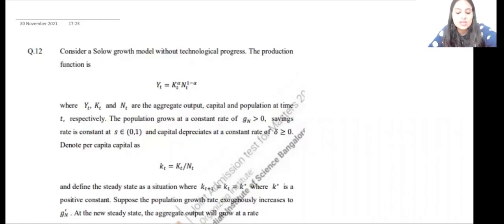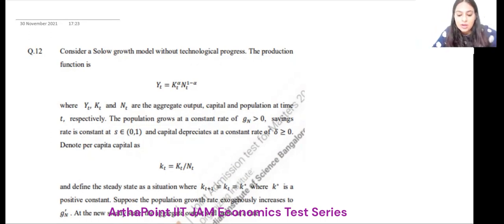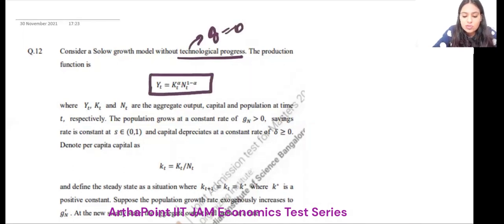Let's see this question now. It says you're given basically a model with no technological progress. So your G is zero. The production function is given to you as this.